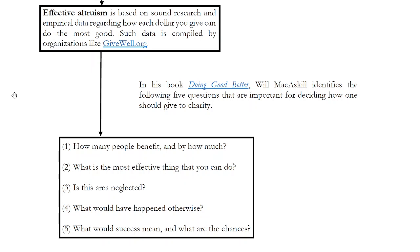Websites such as givewell.org have compiled the most effective charities that you can give to, where you get the most benefit per dollar. And they ask questions like: how many people specifically are going to benefit from my donation and how much? What's the most effective thing I can do? Is this a neglected area — it might be very important, helping a lot of people, but if it's already flooded with donations, it may not need very much more support. What would have happened if I had not donated to this charity? What would happen if I gave my money elsewhere? What would success mean, and how likely is that success?